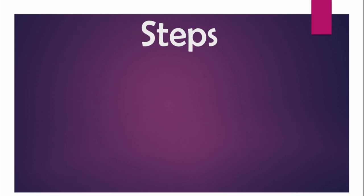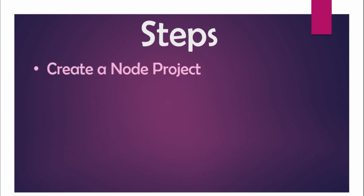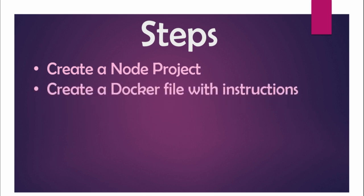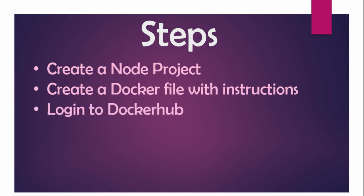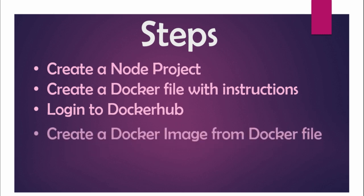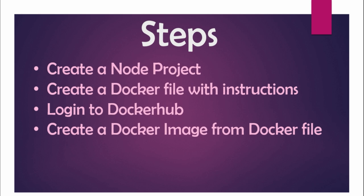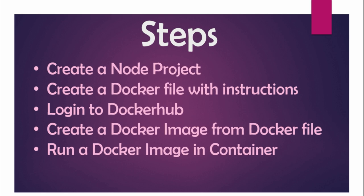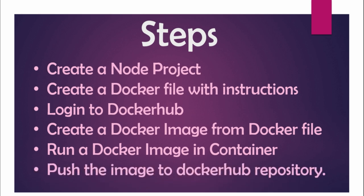Next, we have to follow some steps. The first one is we need to create a Node project which we want to host on a Docker container. Next, we need to create a Dockerfile with some instructions. Next, we need to log into Docker Hub from the console so that we can push the image. Then we need to create a Docker image from that instruction file, run the Docker image inside the container, and finally push our Docker container image to the Docker Hub repository.